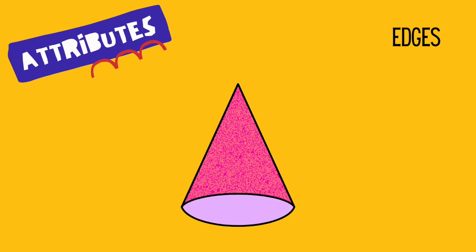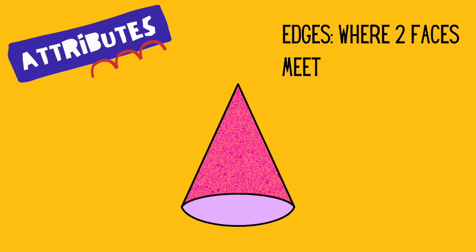Now let's talk about edges. Before we even talk about our cone, it's important that you remember an edge is where two faces meet. Now let's talk about our cone. A cone cannot have any edges. A cone only has one face. In order to have an edge, two faces must meet. Since a cone does not have two faces, it does not have any edges.